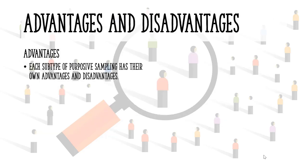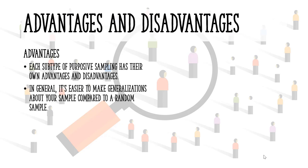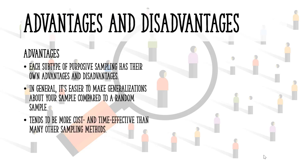Each subtype of purposive sampling has its own advantages and disadvantages. In general, one major advantage of this type of sampling is that it's easier to make generalizations about your sample compared to, say, a random sample where not all participants have the characteristic you are studying. This type of sampling also tends to be more cost and time effective than many other sampling methods.